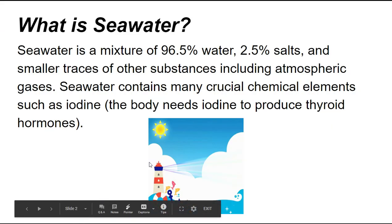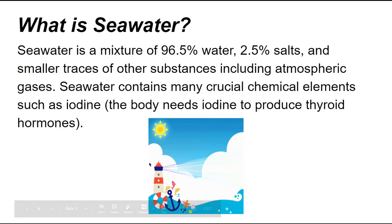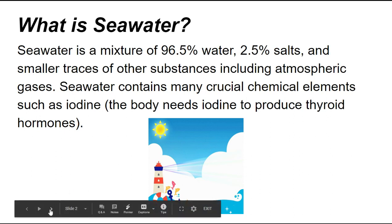What is seawater? Seawater is a mixture of 96.5% water, 2.5% salts, and smaller traces of other substances, including atmospheric gases. Seawater contains many crucial chemical elements, such as iodine. The body needs iodine to produce thyroid hormones.